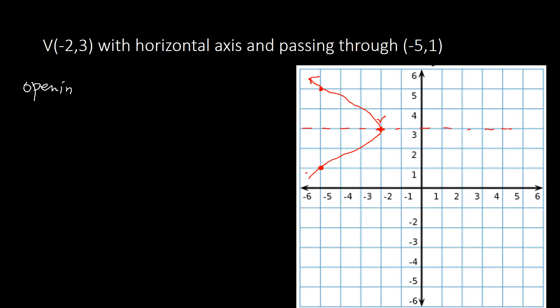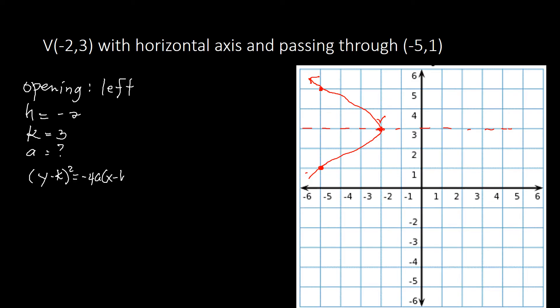The opening is to the left. The vertex gives H = −2 and K = 3, but A is unknown. Note that the endpoints drawn are not necessarily the latus rectum endpoints — (−5, 1) is simply a point on the parabola. For a leftward-opening parabola, the standard equation is (Y − K)² = −4A(X − H). Substituting: (Y − 3)² = −4A(X − (−2)), which gives (Y − 3)² = −4A(X + 2).